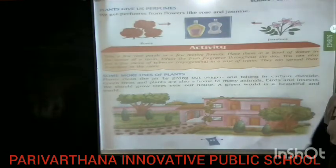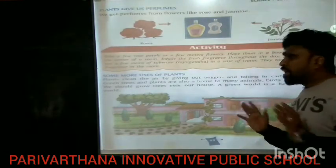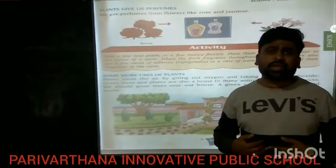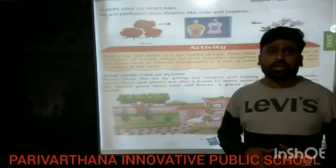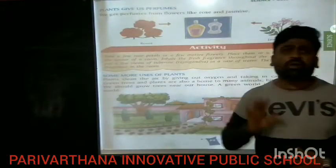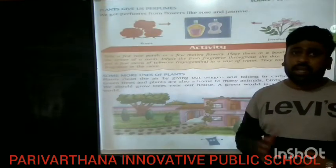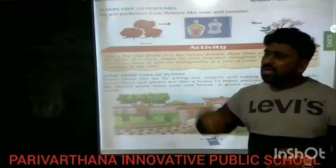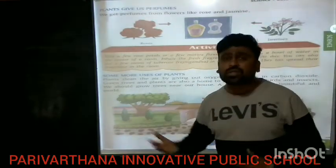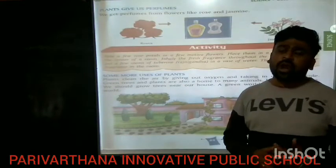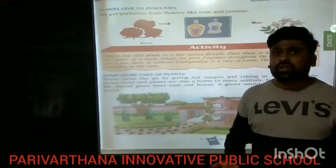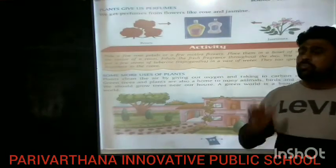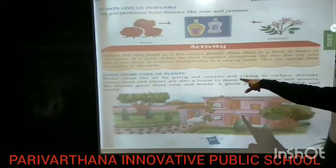Plants also clean the air. Air contains carbon dioxide, but we need oxygen. Oxygen comes from plants through photosynthesis. Using carbon dioxide, the plant produces oxygen. All the carbon dioxide is used up, and oxygen is given out — this is how plants clean the air.